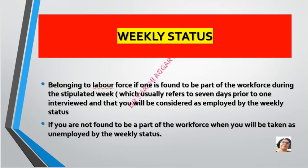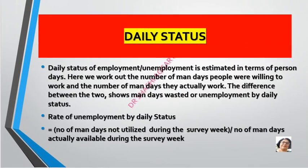Weekly status: if someone has minimum work force participation in the past 7 days, they are considered employed by weekly status. If they are not part of the workforce in that week, they are considered unemployed by weekly status. Daily status is calculated per day — we work out the number of man-days people were willing to work and the number of man-days they actually worked. The difference shows man-days wasted or unemployed by daily status.